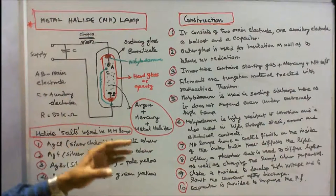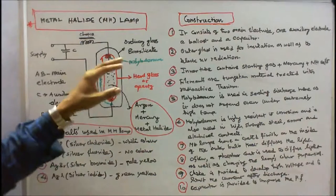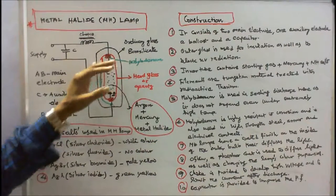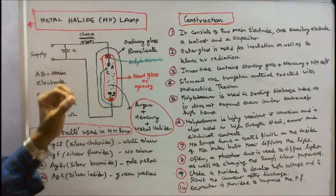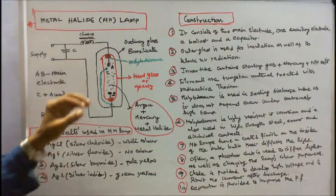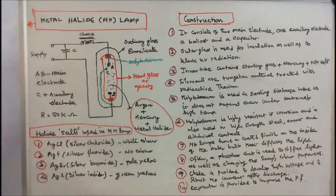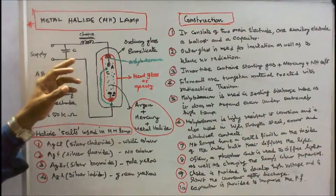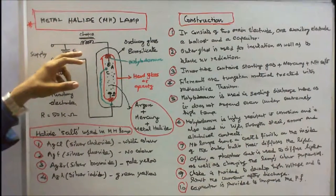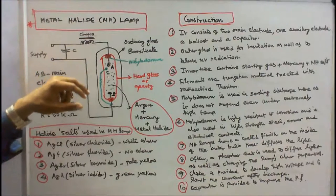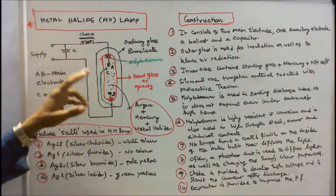Metal halide lamps have a coated finish on the inside of the outer bulb that diffuses light. Often a phosphor coat is used to diffuse light as well as changing the lamp's color properties. Choke is provided to develop high voltage and to limit the current after discharge. Capacitor is provided to improve the power factor.